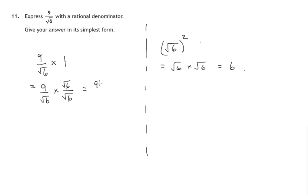So provided we multiply both top and bottom of a fraction by the same number, things are okay because we haven't changed the value of that fraction. We're really multiplying it by 1. So we end up with 9 root 6 over, and remember root 6 times root 6 was just 6.